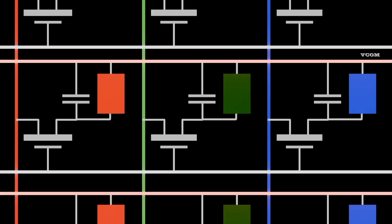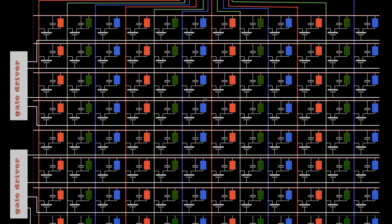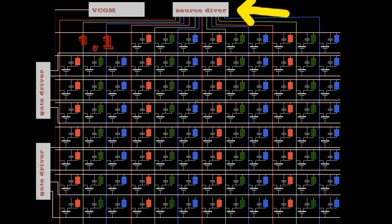Each source of the pixel are controlled by source driver. Each gate driver controls only a certain number of columns.